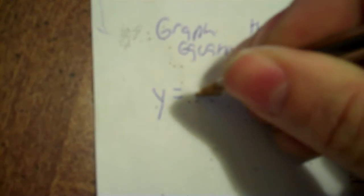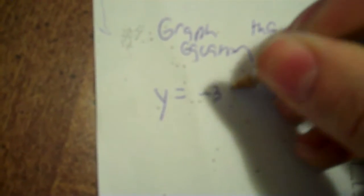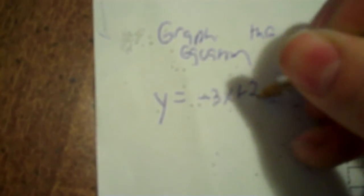On 7.6, this is a review problem first. Graph the equation. I want to start you off with a review, and then there's going to be a much quicker way to do this, but you have to do it correctly.